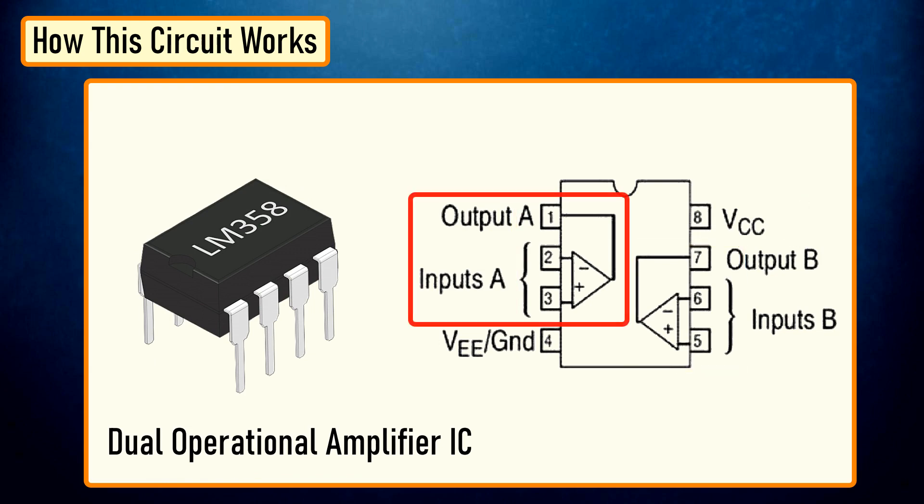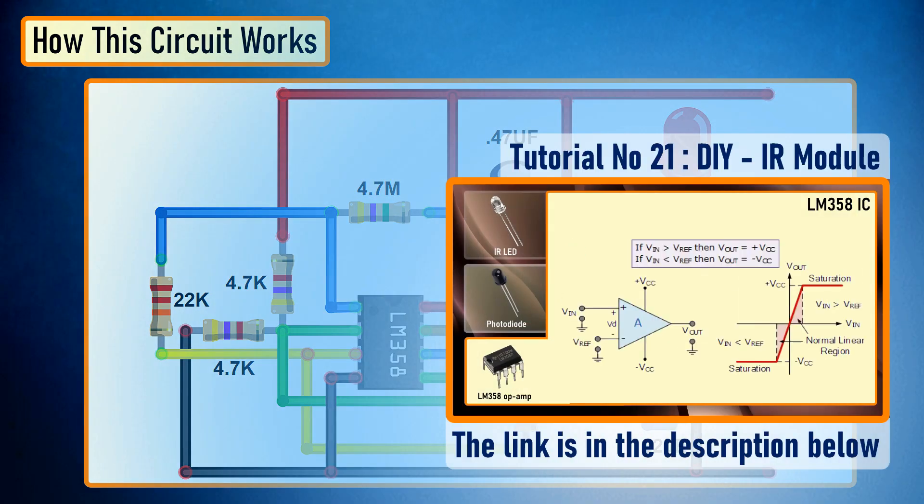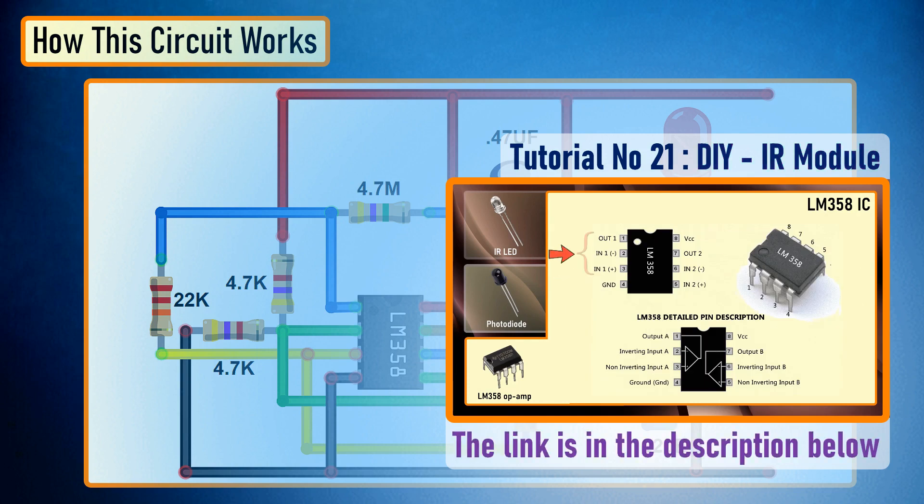Pin number 1, 2, and 3 are one op-amp channel and pin number 5, 6, 7 are the second op-amp channel. As the capacitor charges and discharges, the state of pin number 3 switches from high to low and based on that, pin number 2 of the op-amp obtains the desired output. If you want to know more about this IC, please check out my tutorial number 21 DIY IR module. The link is in the description below.